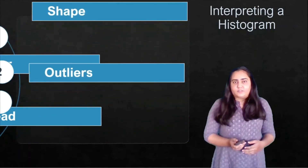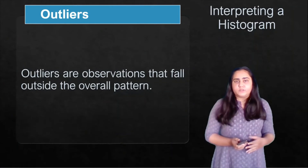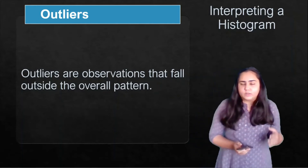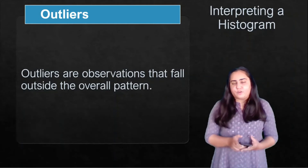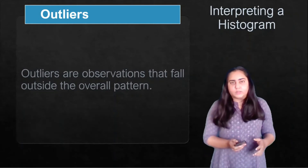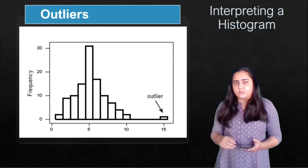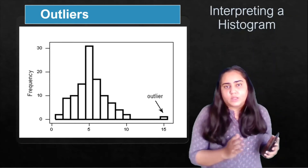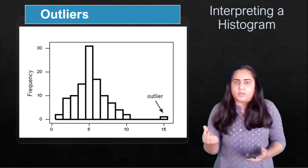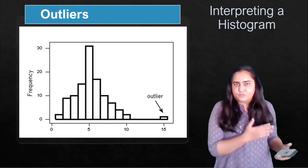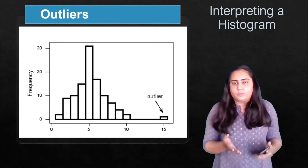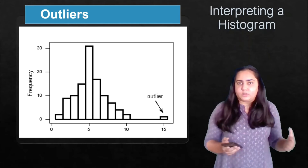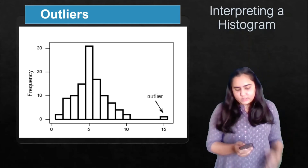The fourth property is outliers. Outliers are observations that fall outside the overall pattern — they do not fit in with the rest of the histogram. You can see an example here: everything else is clustered together from zero to 10, but there is one small bar forming at 15, which is far away from the rest of the data. That is what you would call an outlier — a value that does not fall within the range where everything else falls.